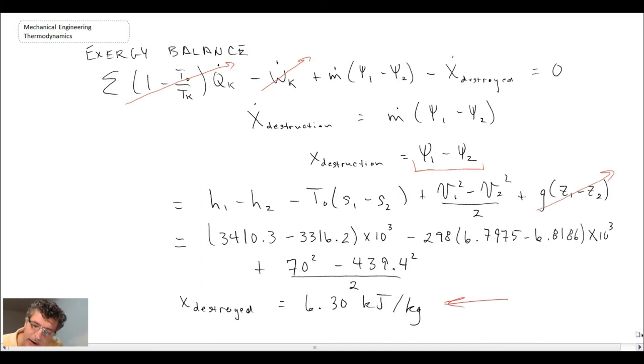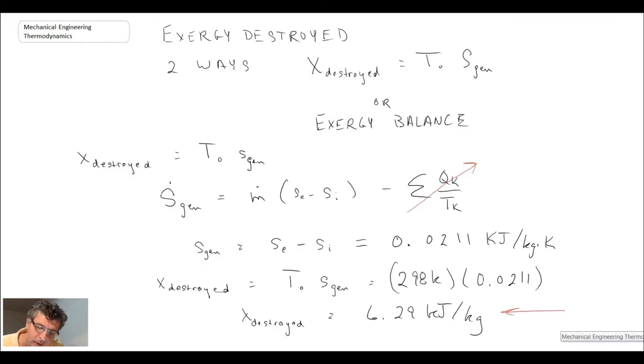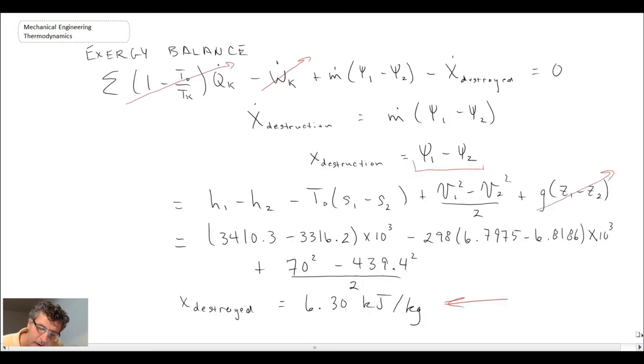Let's take a look back at what we got when we used the previous approach. We obtained 6.29 and with this new approach using the exergy balance we get 6.30. So you can see the two approaches agree more or less, off by 0.01 but that's not a big deal. It's probably a round-off error somewhere. Consequently we see both approaches work.